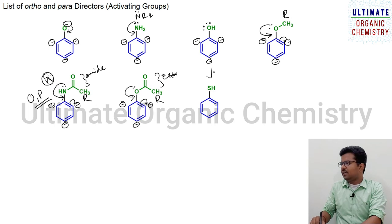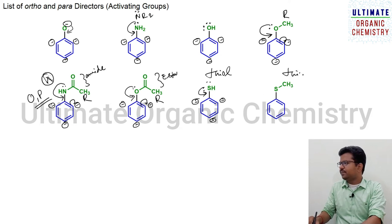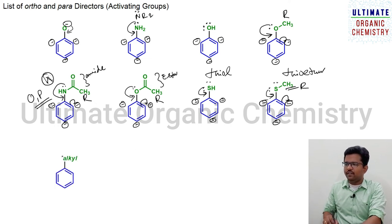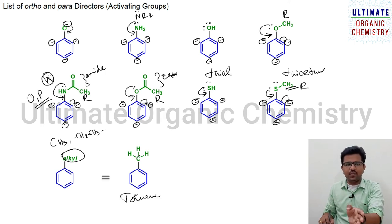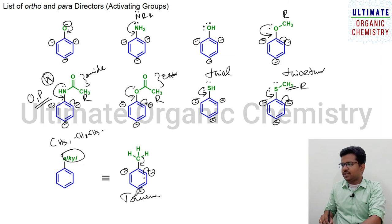Thiol is also a similar case — it has a lone pair of electrons, donates them, and enhances electron density at ortho and para positions, making it an ortho-para director. Thioether (SR, where R can be anything) also has sulfur with two lone pairs that enhance electron density. Alkyl groups such as methyl or ethyl — in toluene for example — cannot undergo resonance since carbon has no lone pairs, but they undergo hyperconjugation, which also enhances electron density at ortho and para positions, so they are ortho-para directors.